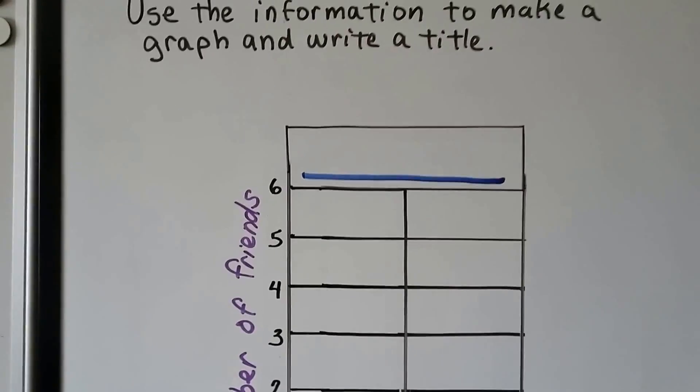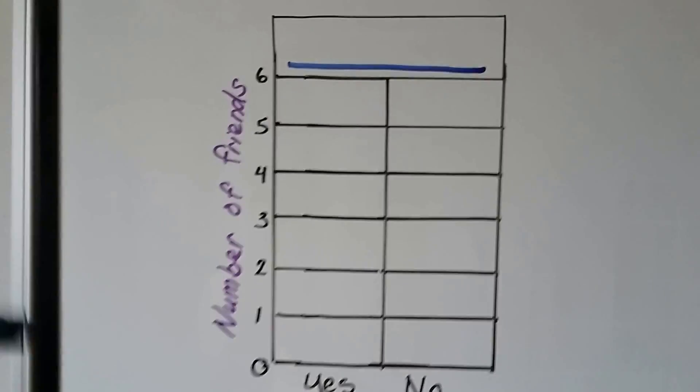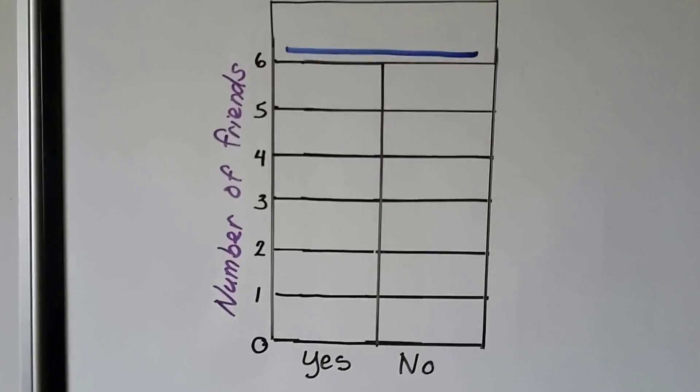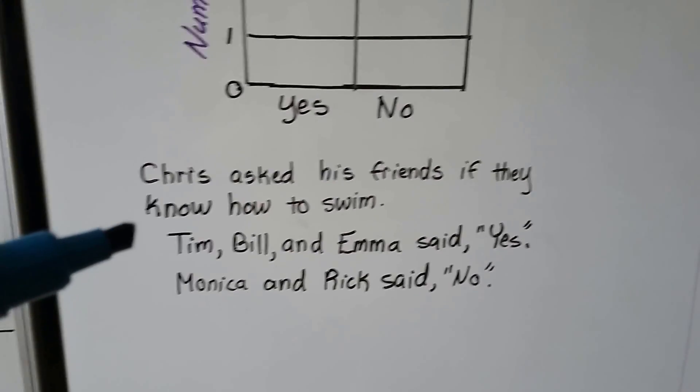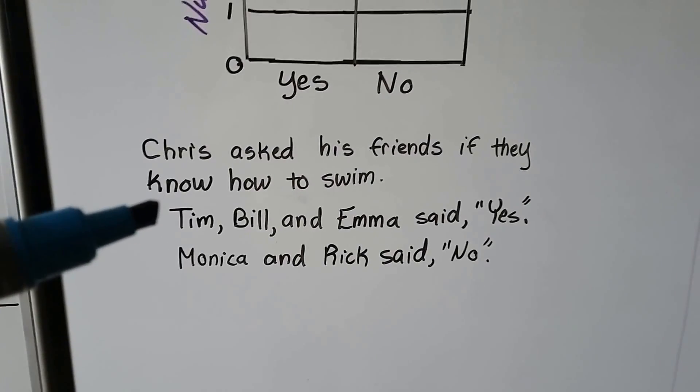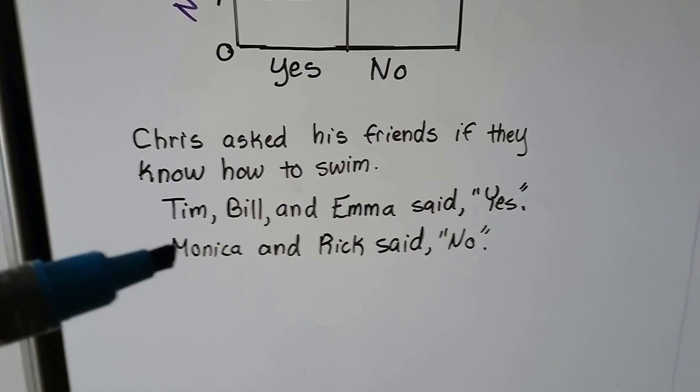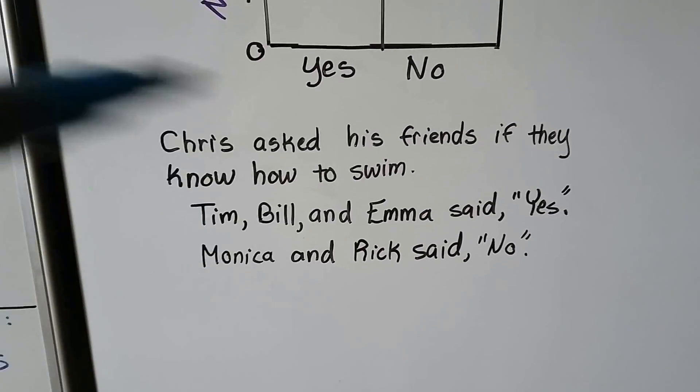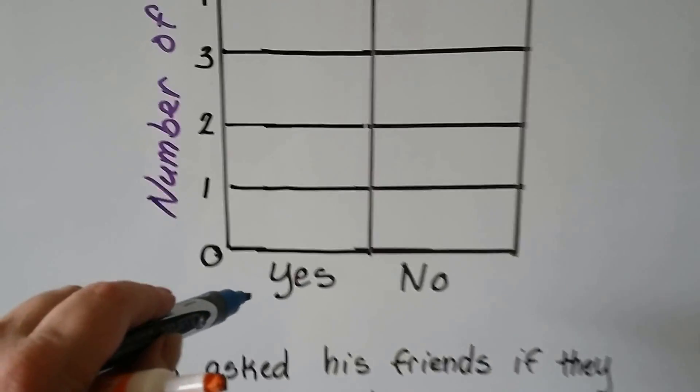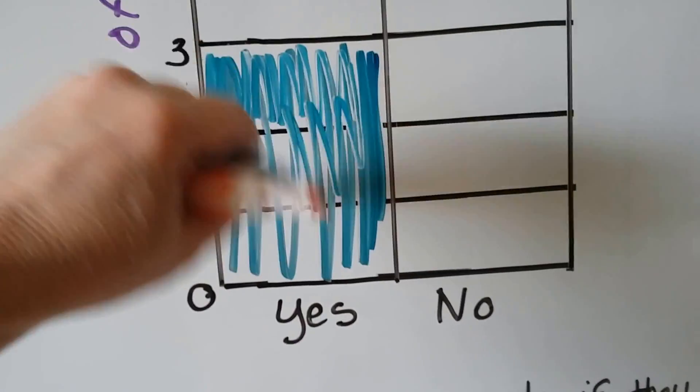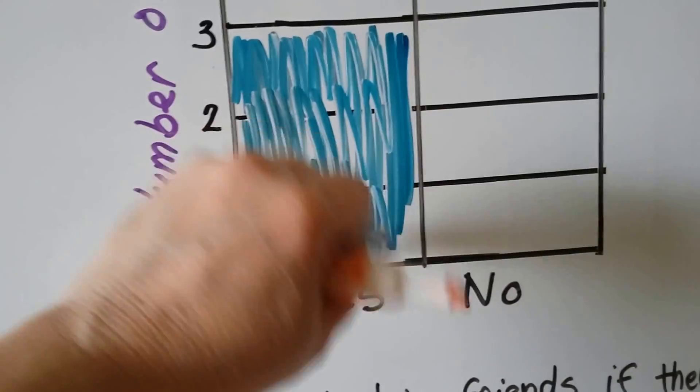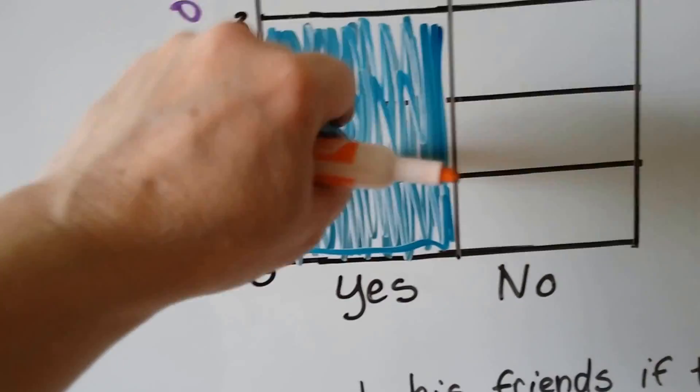We got another one. It says use the information to make a graph and write a title. So this one, the scale goes from zero to six. It still needs a title. It says number of friends and it says yes, no. Here's the information. Chris asked his friends if they know how to swim. Tim, Bill, and Emma said yes. Monica and Rick said no. So that's one, two, three people said yes. So we can make a bar that goes up to three for the yes. We can fill in these three boxes. These are the yes ones. Kind of messy, but it's okay.